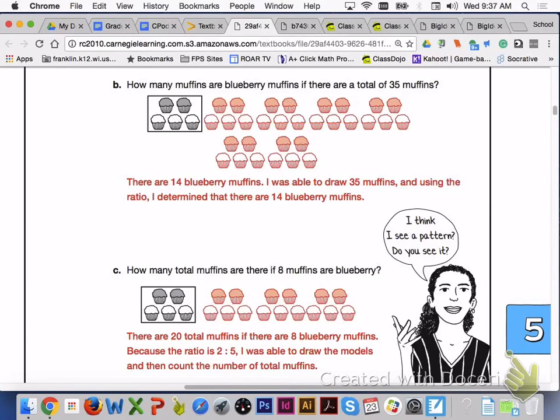And finally, for letter C, if there are 8 blueberry muffins, there will be 20 total muffins. If the ratio is 2 to 5, you can draw the model and count the number of total muffins.